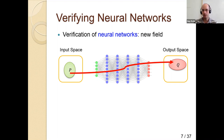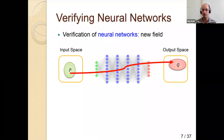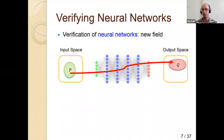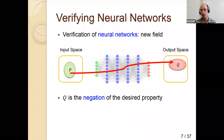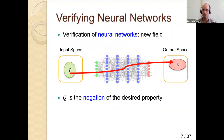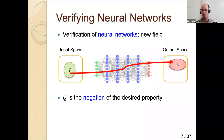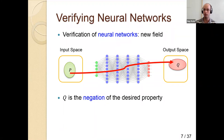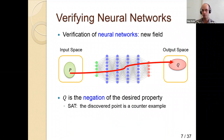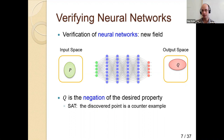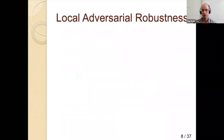This formulation is simple but practically all interesting problems on neural networks can be reduced to it. Q is typically the negation of what we want to show — for example, P might be images very close to a panda, and Q might be points classified as gibbons. If the verification problem returns SAT, we have a counterexample — a point in P mapped to Q. If no such point exists, we reply UNSAT and know the network is safe.